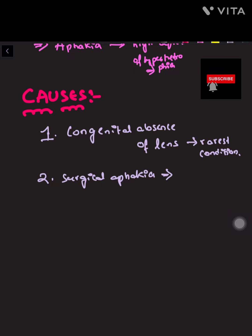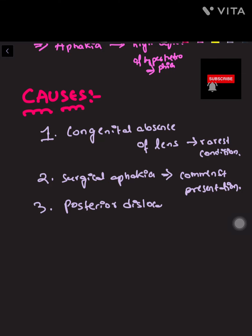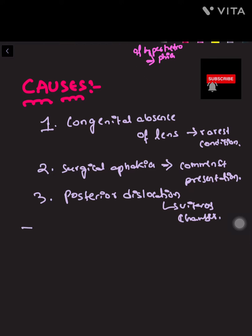Other causes include posterior dislocation of the lens into the vitreous chamber due to trauma, and absorption of the lens into the vitreous chamber.